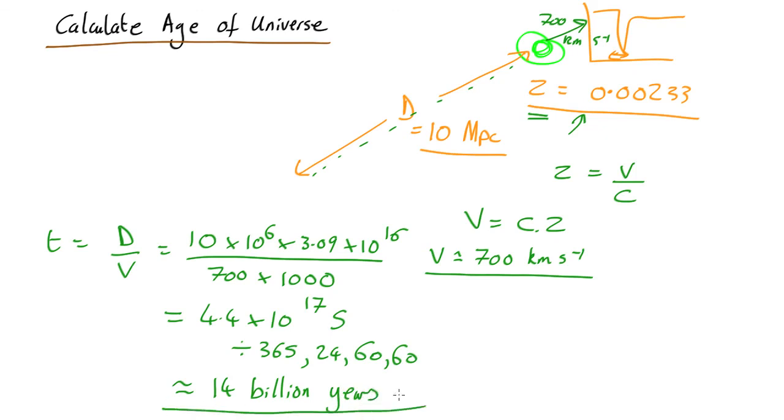So that's giving us an estimate of the age of the universe, assuming that it's moving away from us directly at a constant speed the whole time, which won't be true, but gives us a rough figure.